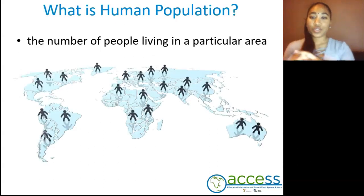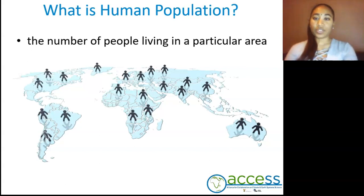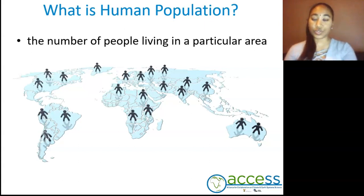So what is human population? It is the number of people living in a particular area. As we've learned from human evolution, humans have migrated out of Africa and moved to different continents, leading to our global population.